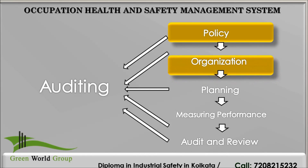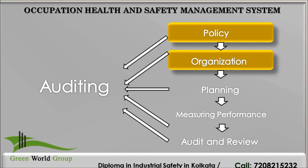The next key element is organization. This section shows the structure and arrangements in place to ensure the policy can be delivered. To ensure that a positive safety culture is adopted will require that all staff understand their responsibilities and are motivated and empowered to work safely.